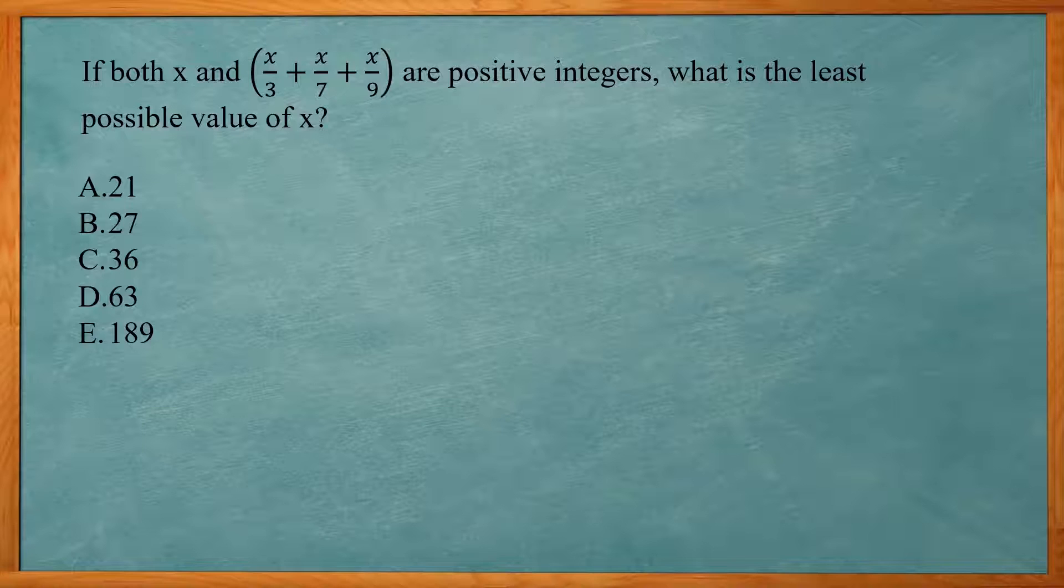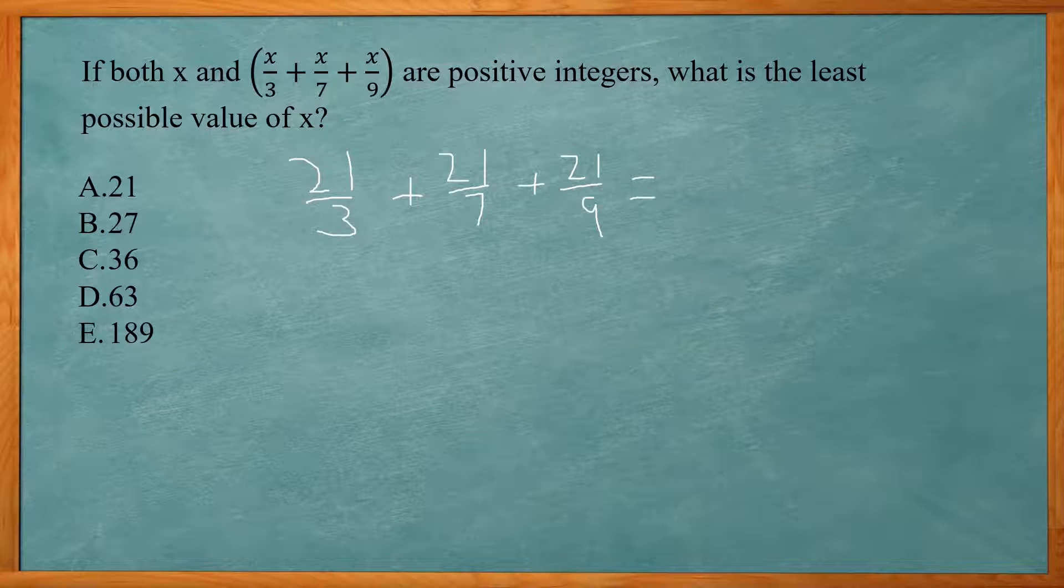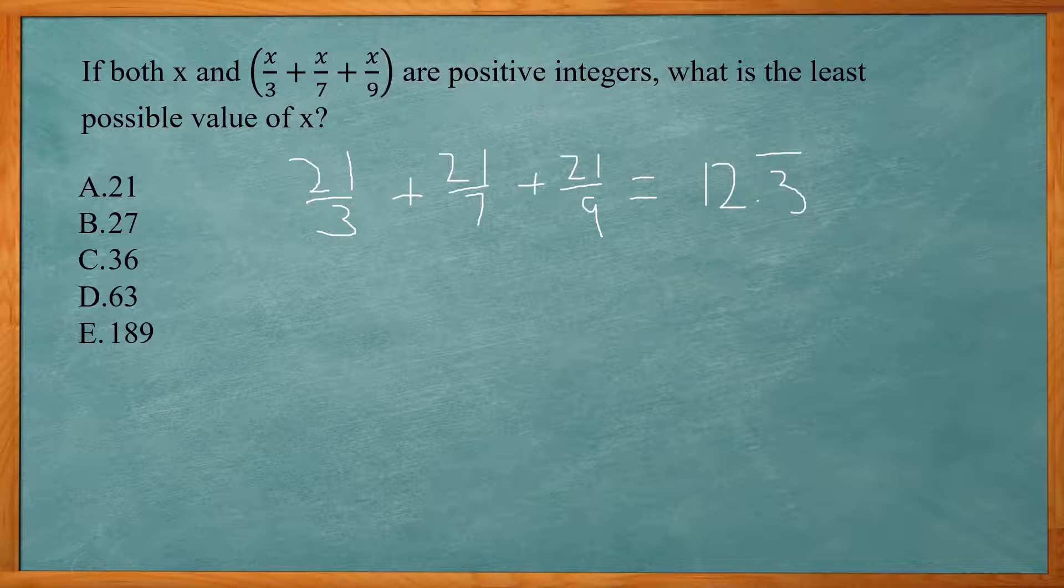Now let's read it. If both x and the quantity x over 3 plus x over 7 plus x over 9 are positive integers, what is the least possible value of x? So again, we just plug in the answer choice. We're going to try A first. 21 divided by 3 plus 21 divided by 7 plus 21 divided by 9, and we get 12.3 repeating. So that's not an integer, so that's not our correct answer choice.